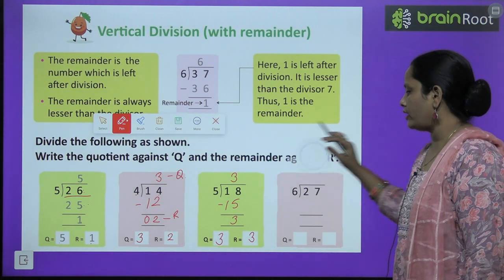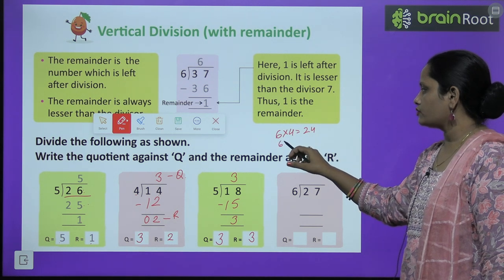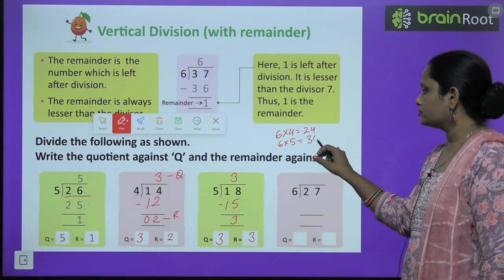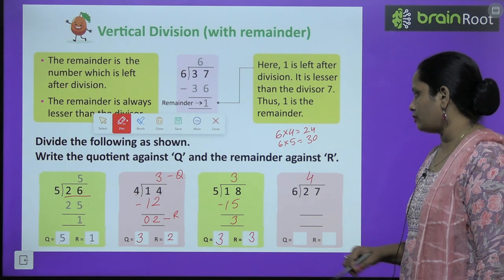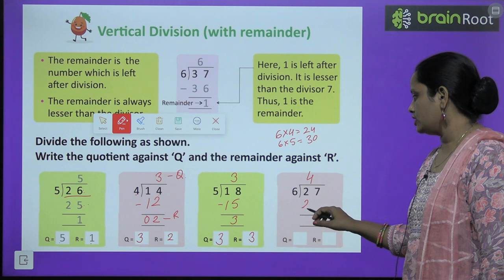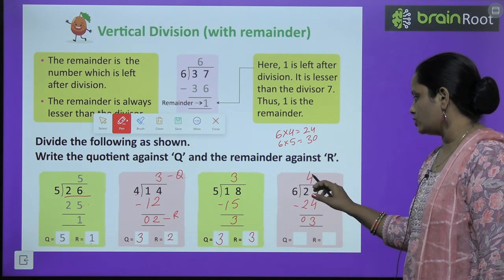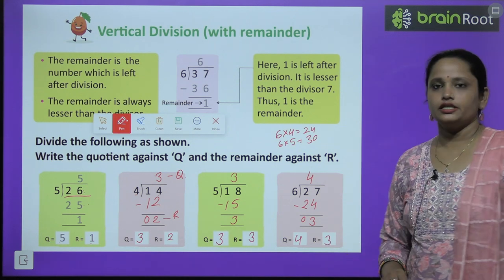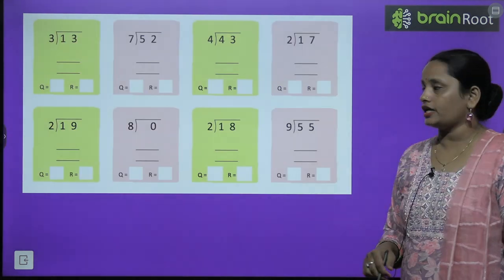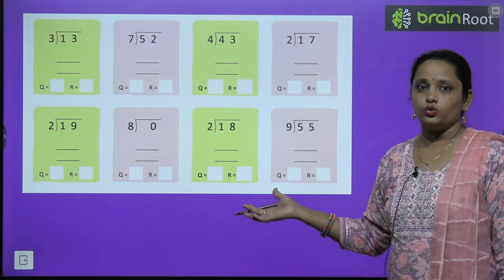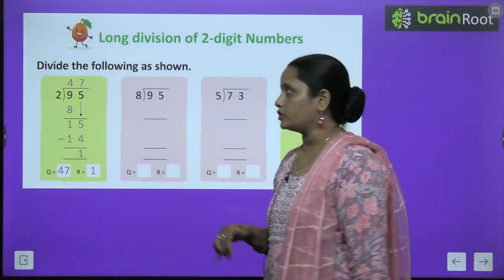I hope this is clear, children. Next: divide 27 by 6. So let's read the table of 6: 6 fours are 24, 6 fives are 30. When we read the table of 6, we saw that 5 times gives a bigger number, so we write 4 times: 24. Now we subtract 7 minus 4 — we get 3 — and here we get 0. So 4 is the quotient and 3 is the remainder. I hope this is clear to you, children. This is how division is done. Check which number you can write and do these questions yourself.